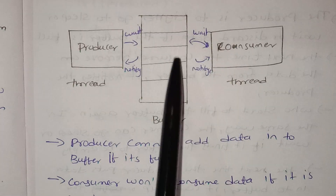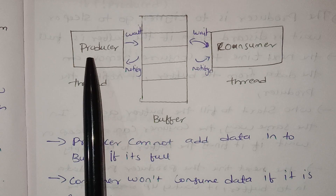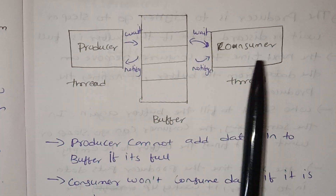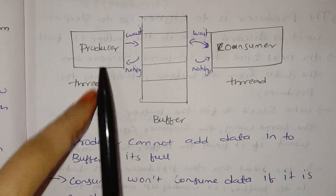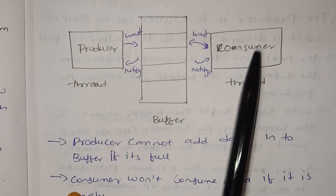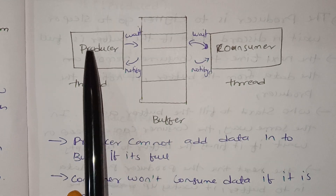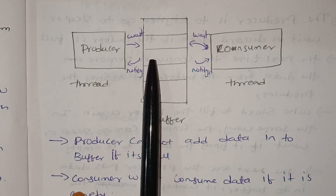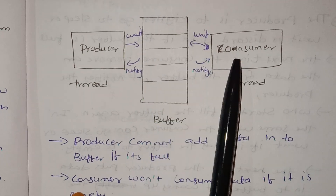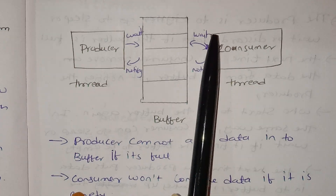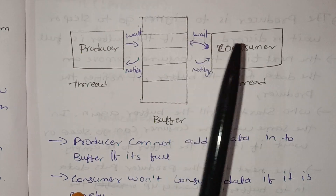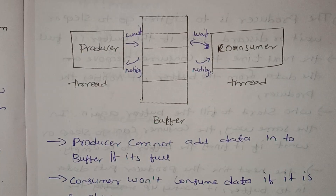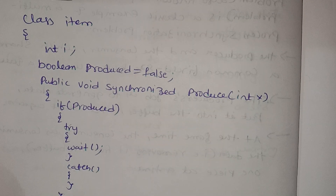Now the consumer is empty, then we will notify the producer. If the consumer is in the sleep state and the buffer is empty, the producer makes data and wakes up the consumer. Then we will notify. So this is how we use inter-thread communication to solve the producer and consumer problem.